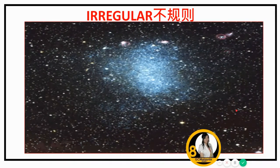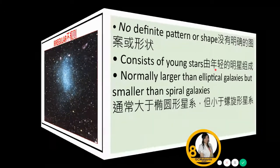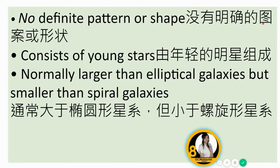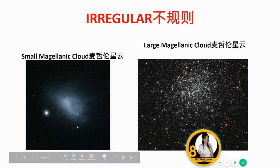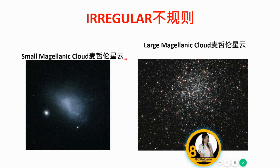Another type of galaxy is irregular galaxies, which have no definite pattern or shape. They consist of young stars and are normally larger than elliptical galaxies but smaller than spiral galaxies. Examples include the Small Magellanic Cloud and the Large Magellanic Cloud.